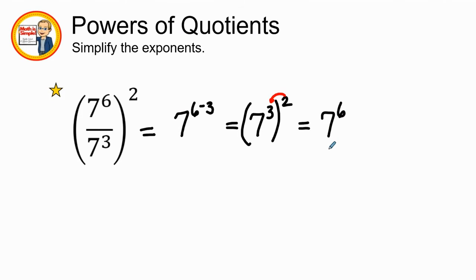We could do it in a different way using the distributive property. We can have 7 raised to the 6th power over 7 raised to the 3rd power, and we are going to raise that entire fraction by 2. Let's distribute the numerator and the denominator by that 2. We have 7 to the 6th times 2, which is 7 to the 12th power, over 7 to the 3rd power times 2, which is 6.